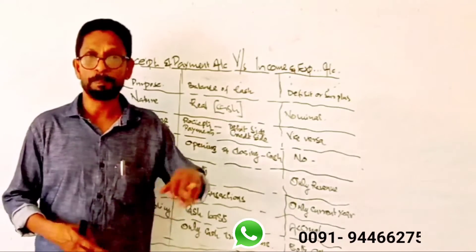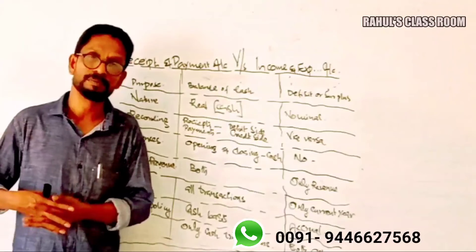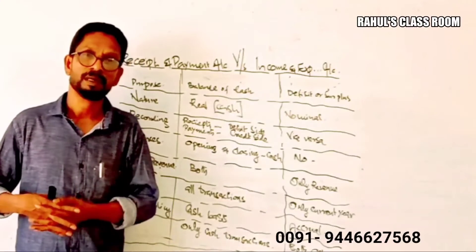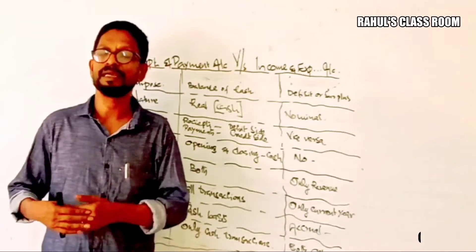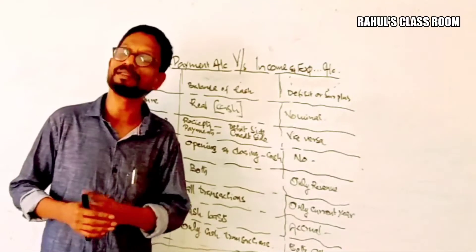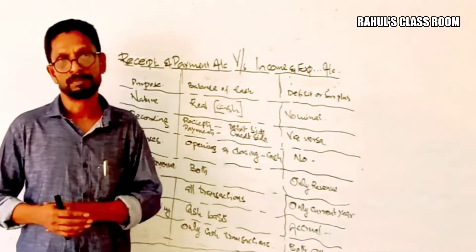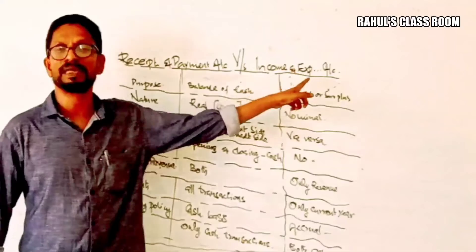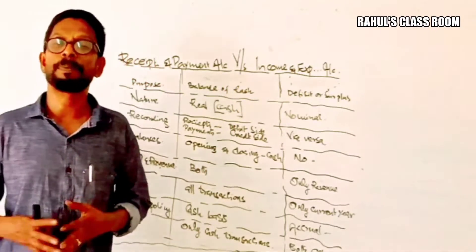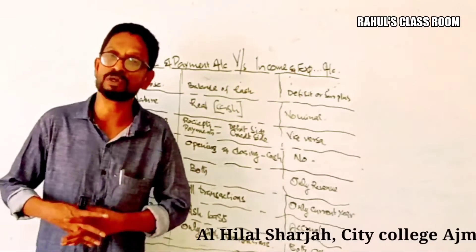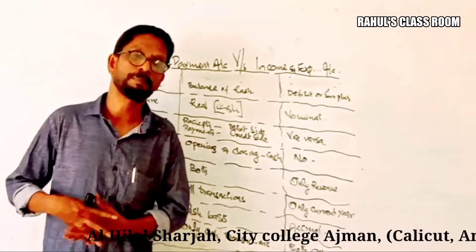The first difference is Purpose. The purpose of the Receipt and Payment Account is to determine the cash balance at the end. But in the case of the Income and Expenditure Account, it is prepared for the purpose of finding the deficit or surplus.